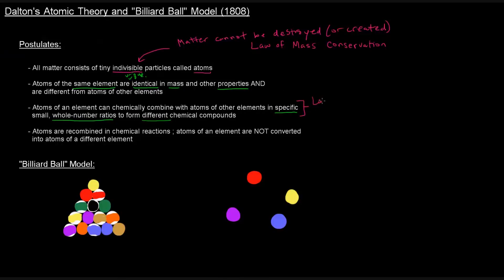The law of definite composition and the law of multiple proportions, right? You've got to have those small whole number ratios of elements of an atom to another. And you can have two different elements combined in more than just one way, right?